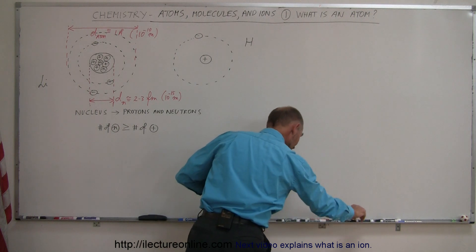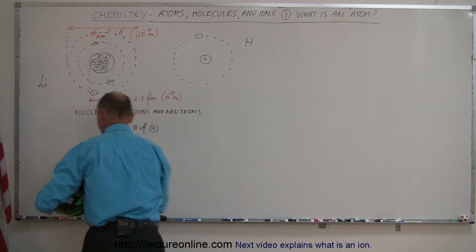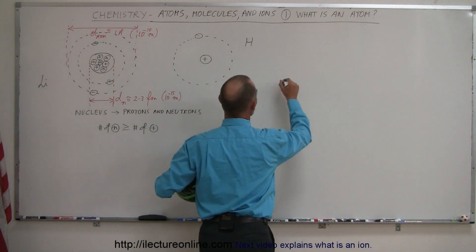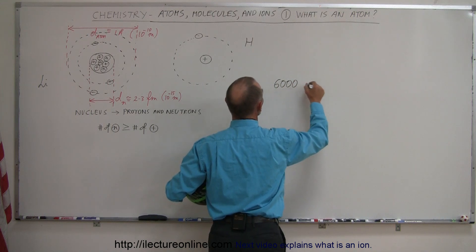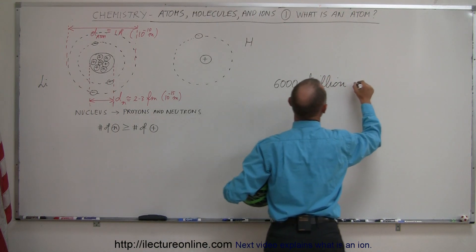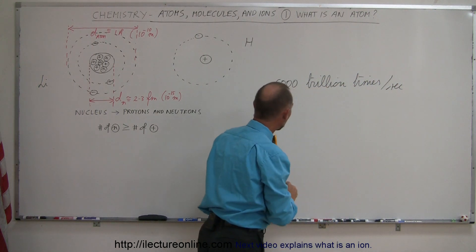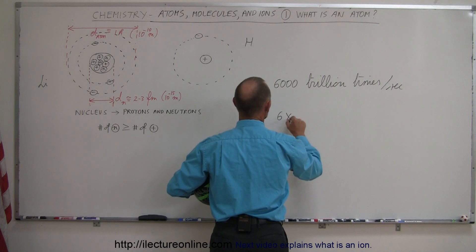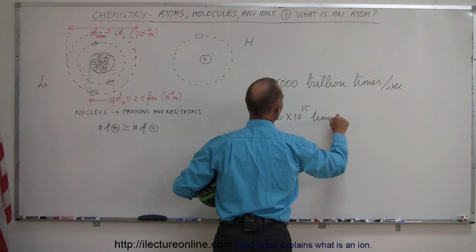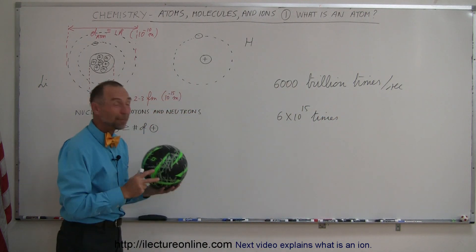So let's write this number down. It's 6,000 trillion times per second. That is 6 times 10 to the 15 times every single second. Can you imagine a little electron going around the nucleus that many times in a second?